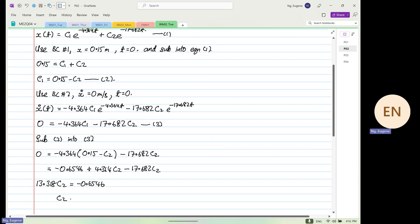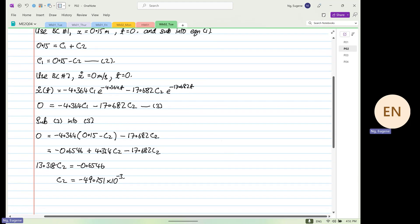So c2 is equal to minus 0.6546 divided by 13.318 equals minus 49.151 times 10 to the power minus 3. So that's our c2.